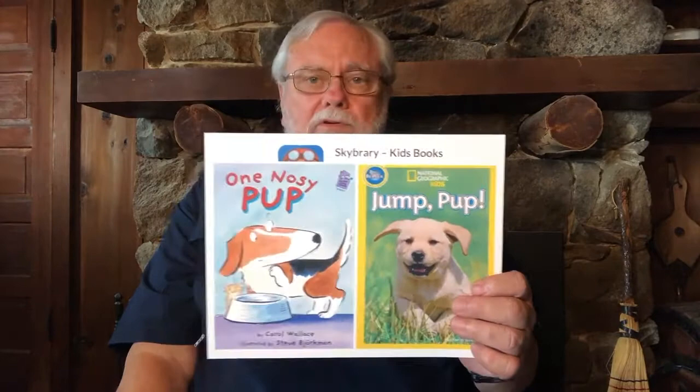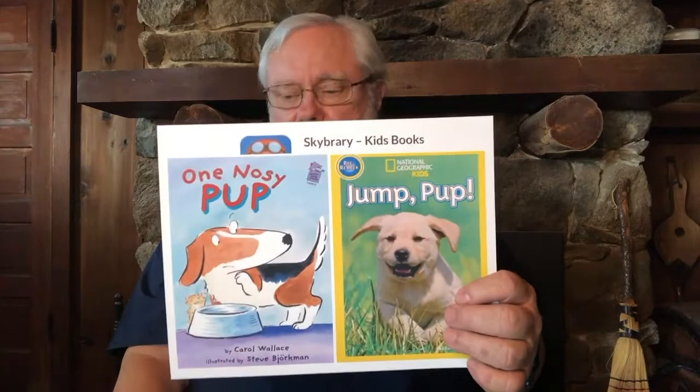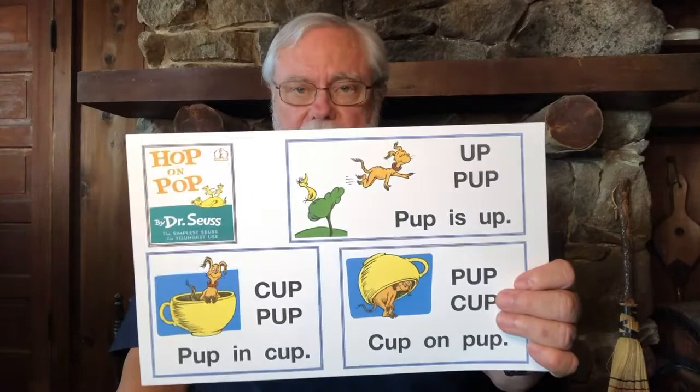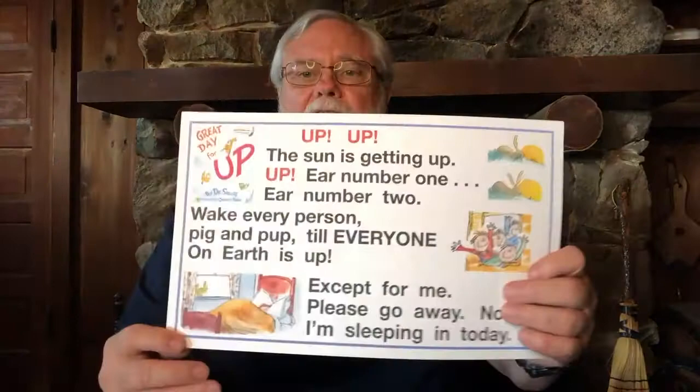Now children know two sounds, and with those two sounds we can start to make words. If we have the sound of P from lesson two and the sound of U from lesson three, combining those two sounds gives us two words: up and pup. Here are some Skybrary books — 'The Nosy Pup' and a non-fiction book about puppies. I always use this book in early stages with young children because Dr. Seuss started with the same two words in his easiest book, 'Hop on Pop,' which starts with: Up, pup — Pup is up. Then he wrote an entire book about pups called 'Great Day for Up,' which also has the words up and pup.